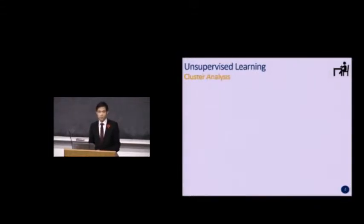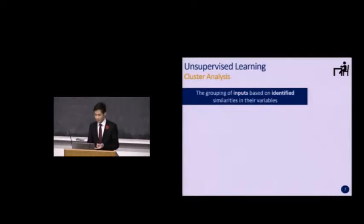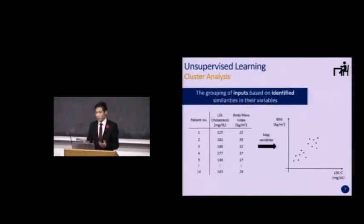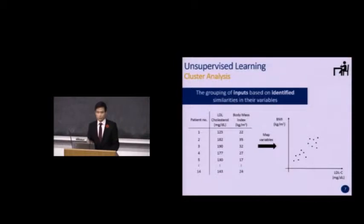One of the most widely used algorithms in unsupervised learning is cluster analysis, defined as the grouping of inputs based on identified patterns or similarities in their variables. Imagine a data set of patient records with two factors: LDL cholesterol level and body mass index. With 14 inputs, the algorithm plots these variables and tries to predict groupings. It might identify two clusters — those in a blue circle with low cardiovascular disease risk, and those in a red circle with higher risk.